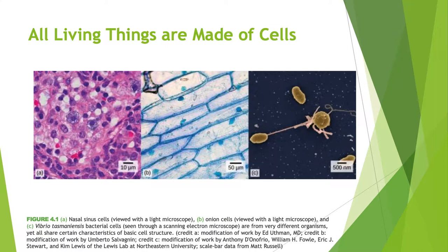Panel C shows a bacterium belonging to the genus Vibrio. Vibrio can cause significant human disease — cholera, for example, is caused by a related bacterium. These cells have been imaged with a scanning electron microscope. So you have an example of an animal cell, a plant cell, and a prokaryotic cell that lacks a nucleus. There are many reasons scientists want to look at cells, so they've had to develop tools to make that happen.